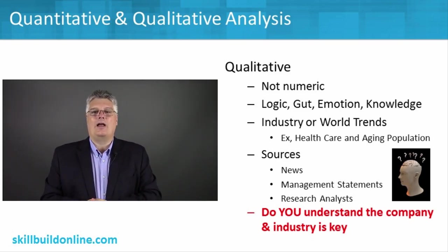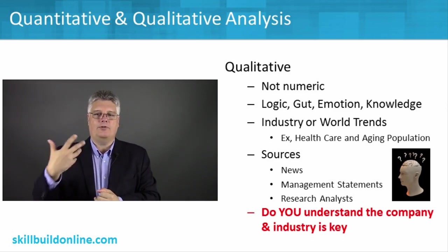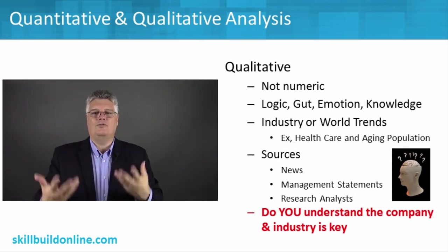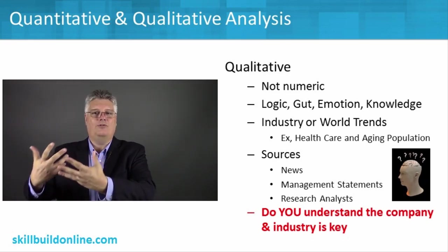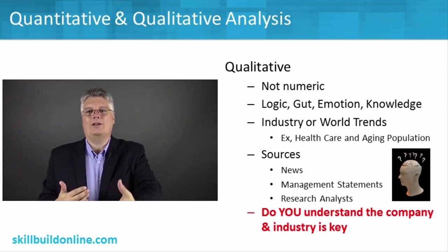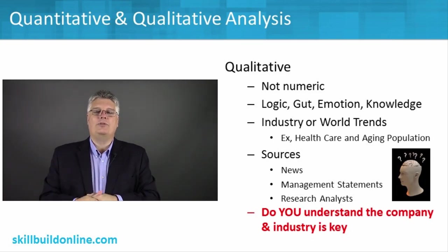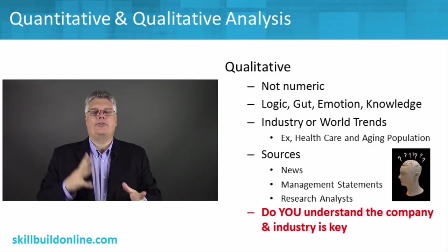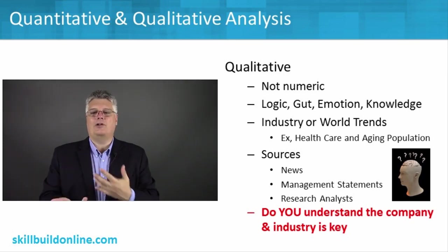Your sources for qualitative information include news, industry publications, and management statements. When companies release their income statement or balance sheet, they might have a conference call where they talk to investors about future plans — expanding into new markets, closing or opening stores, layoffs or new hires. Those management statements can impact a stock. Research analysts who listen to those conference calls and cover particular sectors also give out statements and talk about stocks, and that's part of your qualitative information too.